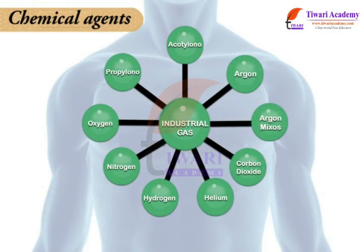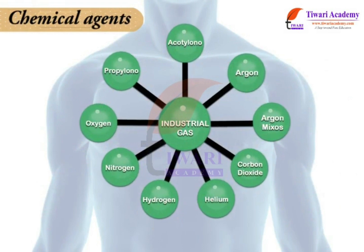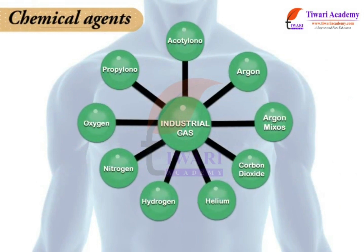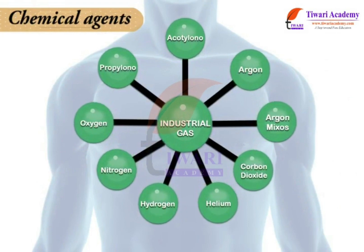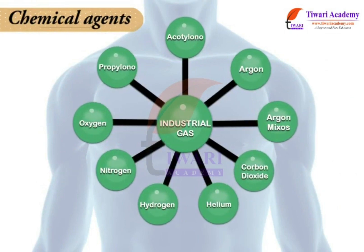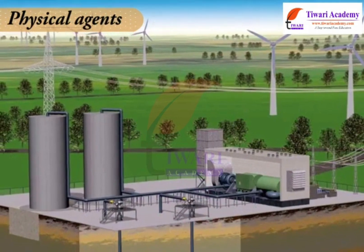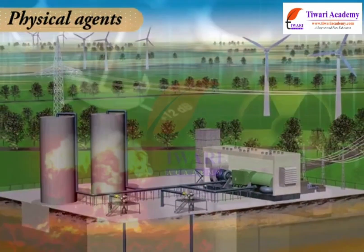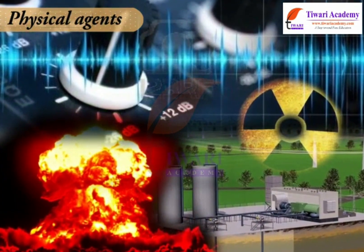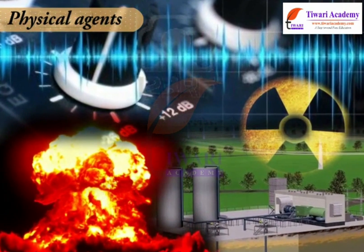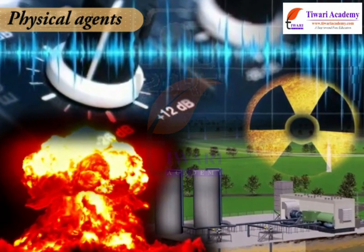Chemical agents such as pollutants, industrial gases, dust, metals and allergens enter the body by inhalation or ingestion. Physical agents include heat, cold, humidity, pressure, radiation, electricity and sound.